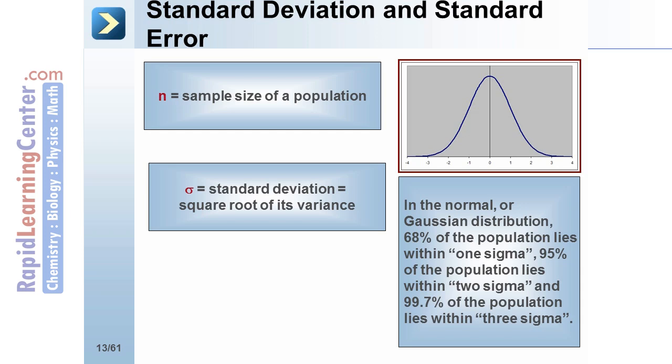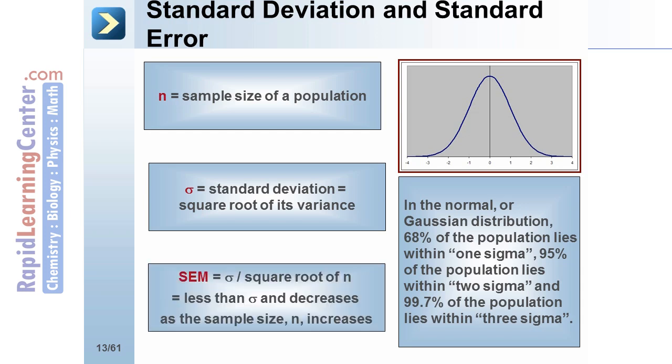The standard error of the mean (SEM) is defined as sigma divided by the square root of n. The standard error of the mean is less than sigma and decreases as the sample size n increases.